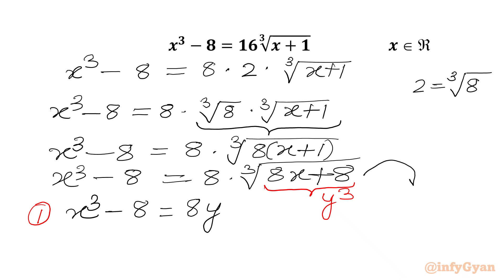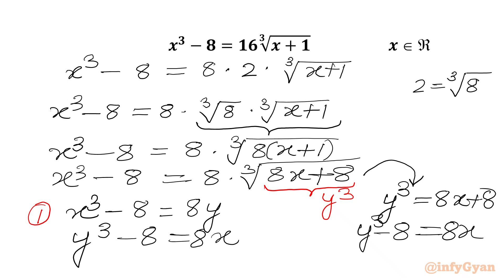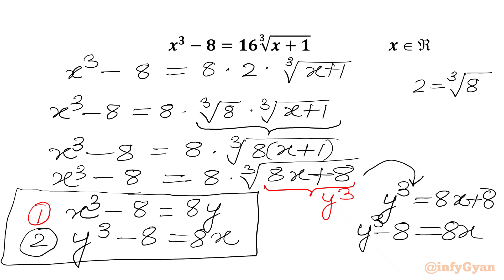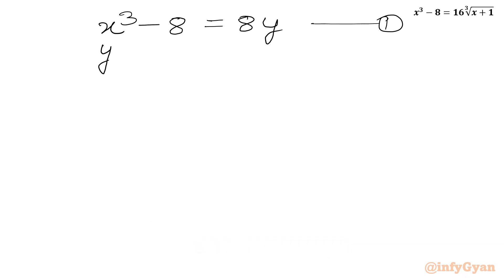From the substitution equation we can write y³ = 8x + 8. Subtracting 8 from both sides gives y³ - 8 = 8x. This is equation number 2. We are now going to solve this system of equations: equation 1 is x³ - 8 = 8y, and equation 2 is y³ - 8 = 8x.